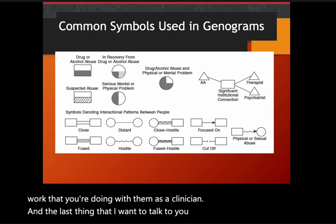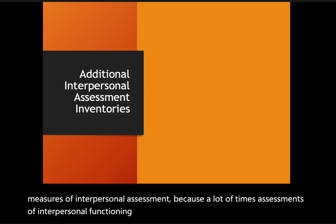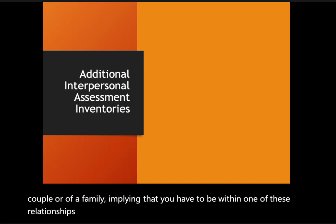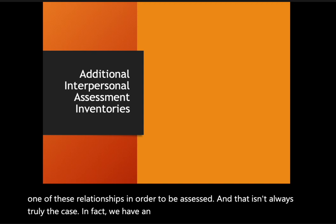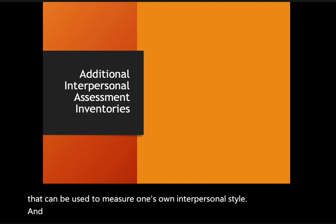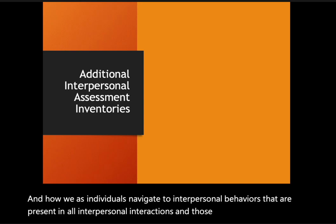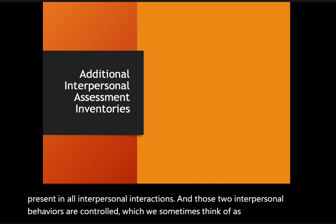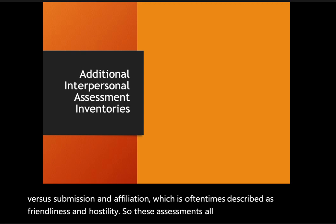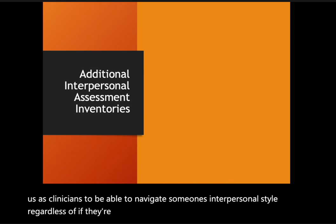The last topic is some additional measures of interpersonal assessment. Assessments of interpersonal functioning tend to be really focused on members of a couple or family, implying you have to be within one of these relationships to be assessed — but that isn't always the case. We have an entire list of interpersonal assessments that can be used to measure one's own interpersonal style and how individuals navigate the two core interpersonal behaviors present in all interpersonal interactions: control (dominance versus submission) and affiliation (friendliness versus hostility).